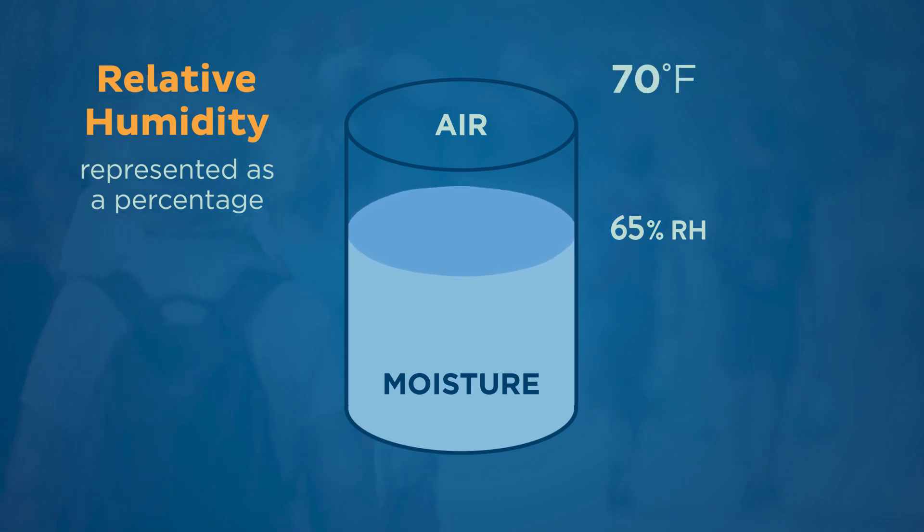A number of 65% RH, for example, indicates that 65% of the air's ability to hold water vapor is used up.